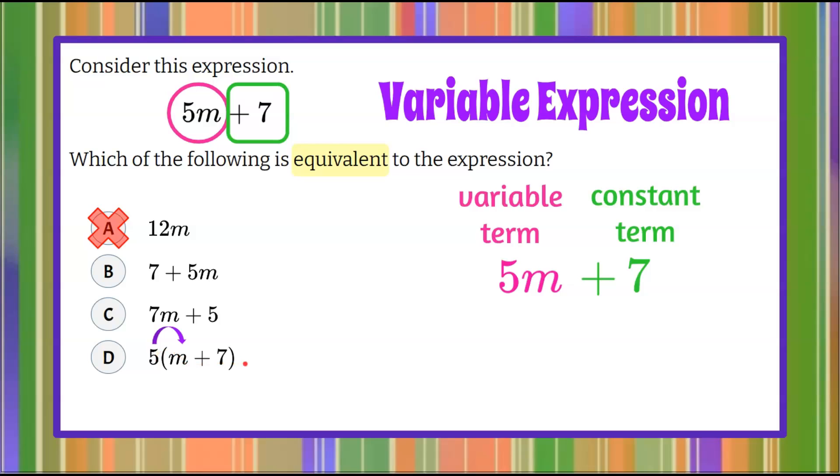5 times m is 5m, then 5 times 7 is add 35. So we can see that answer choice D is not correct because they're adding 35 instead of adding 7.